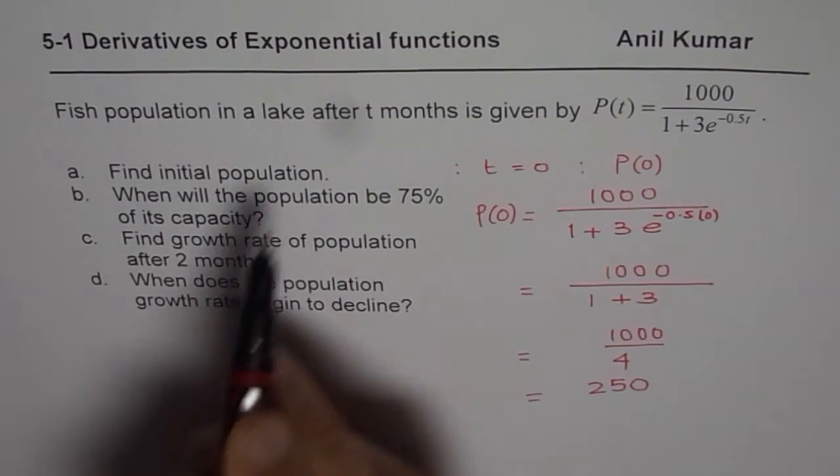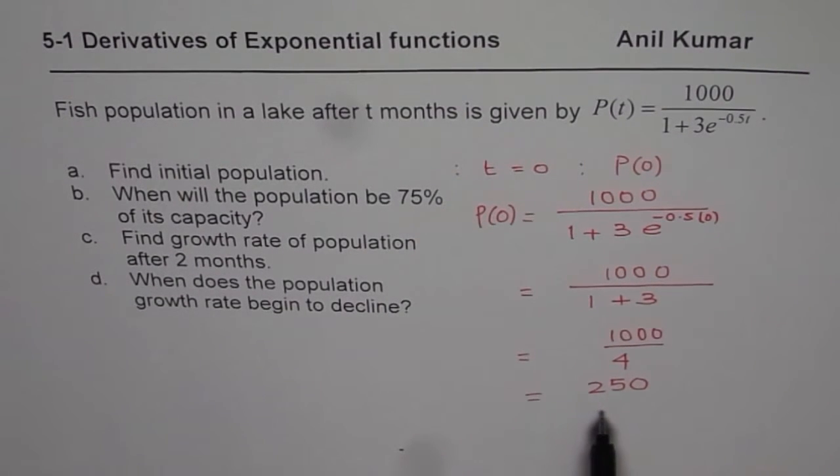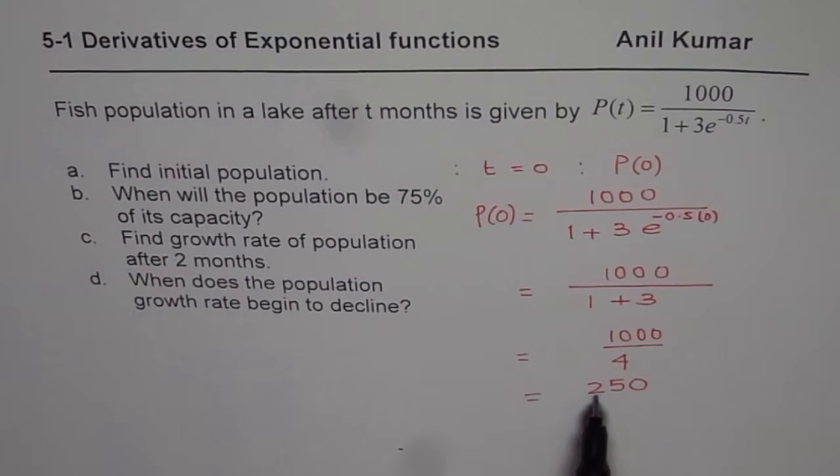So the initial population is 250. That is how you are going to find the initial population. You clearly see that fish population here is 1 fourth of 1000 and that is 250. Now, the question for you is what does 1000 represent?